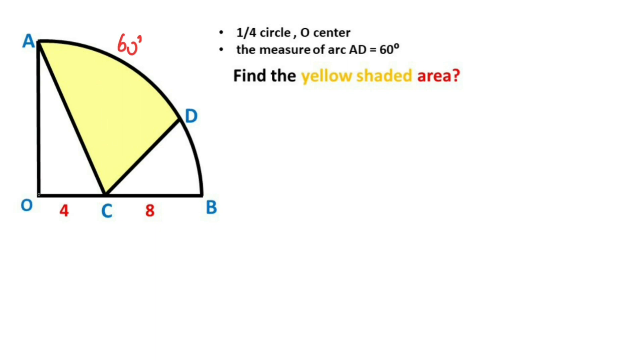First, if we connect points O and D, this angle must be 60 degrees because of the center angle, leaving 30 degrees here. Let's call this area S and this area Y. Therefore, S plus Y equals this triangle area.